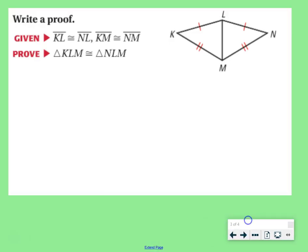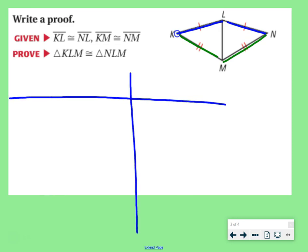Next piece, write a proof. We are given that KL is congruent to NL, and KM is congruent to NM. Prove that triangle KLM is congruent to triangle NLM. We start, we want to make our two columns. Statements and our reasons.